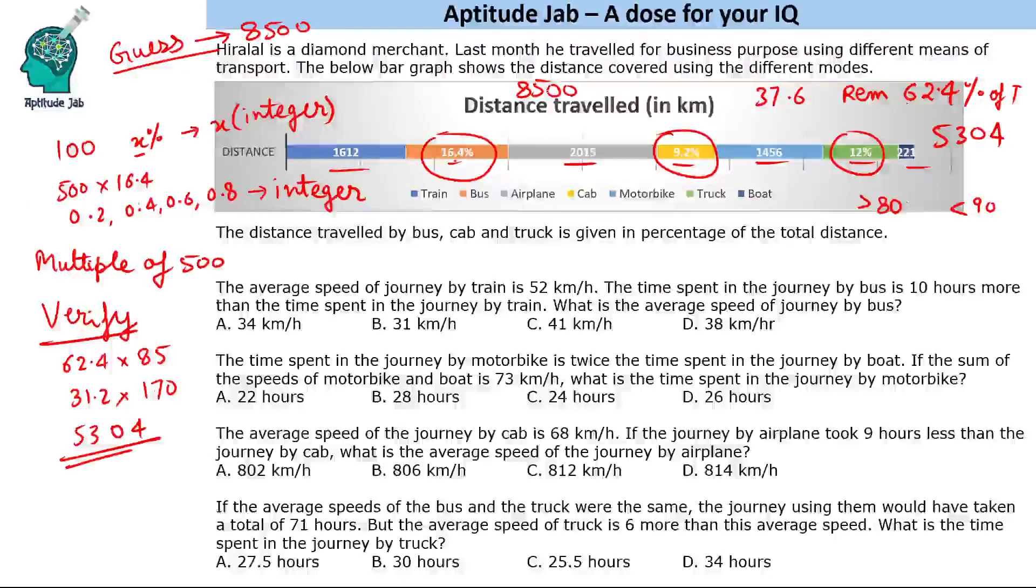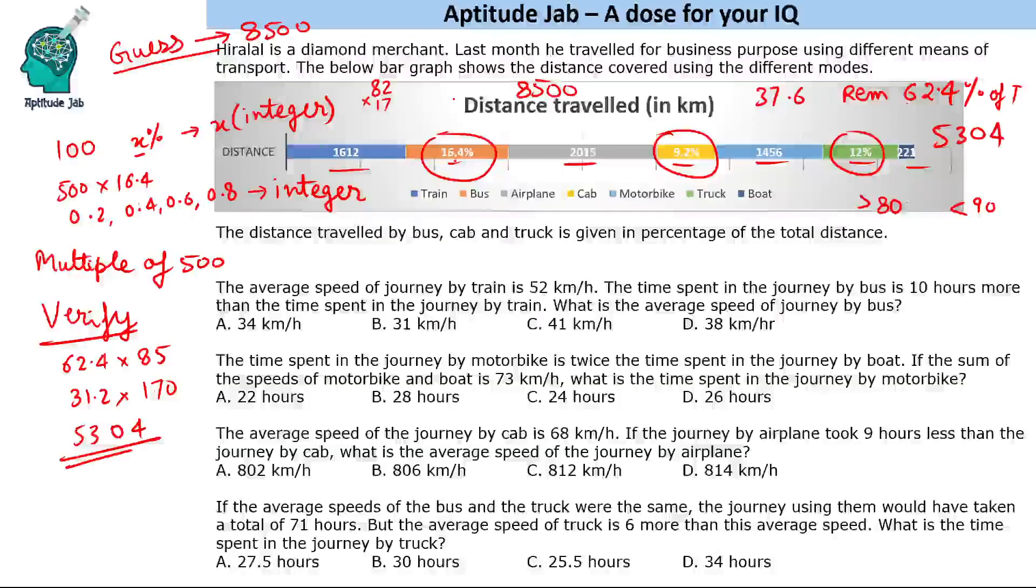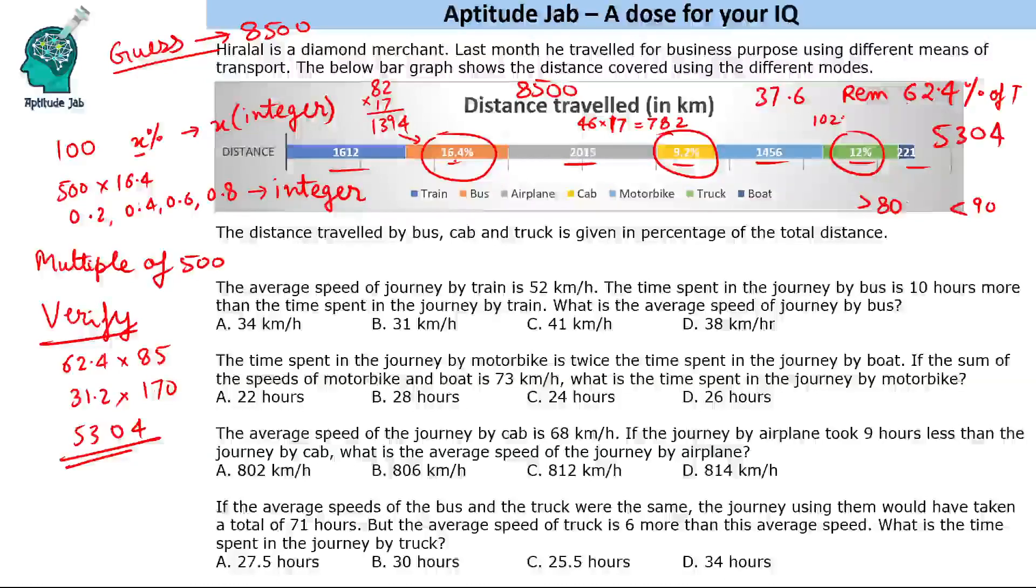Now you can calculate the values. So this will be 16.4 into 850. So again we will multiply this way, we will do 82 into 17. So 16.4 into 85 that I can do is 82 into 17. So 17 times 4, 3 carries, 139. So this will be 1394. 9.2, again 46 into 17. So 17, 610 carries, that is 78, 782. And 12% will be 12 into 85, that will be 1020.